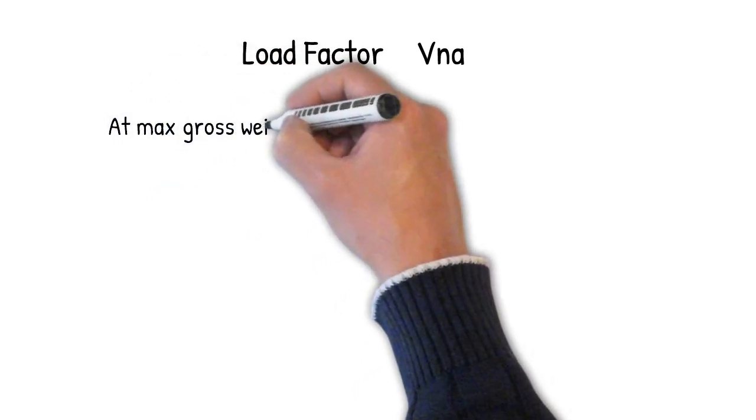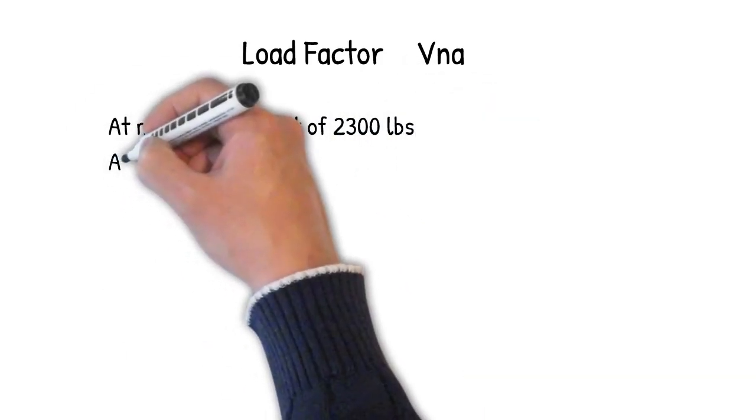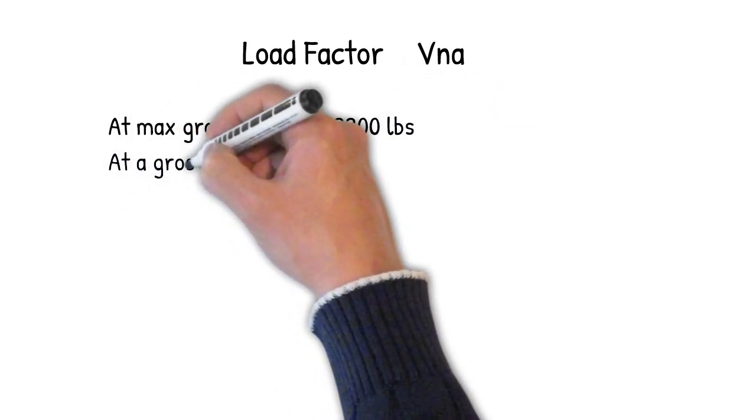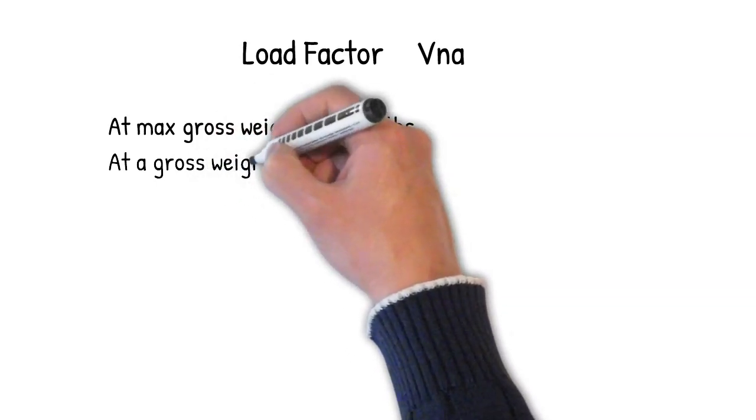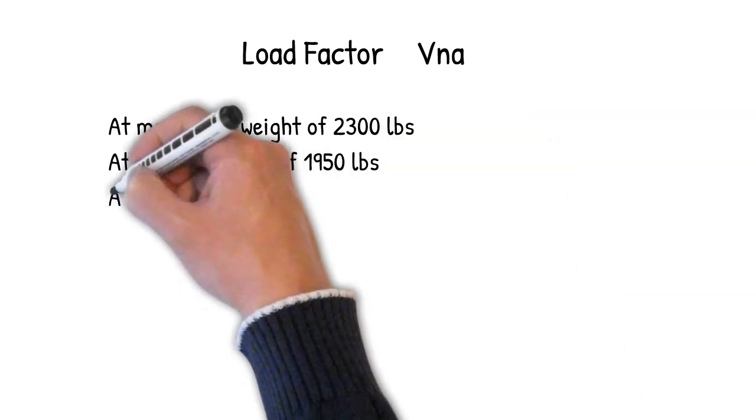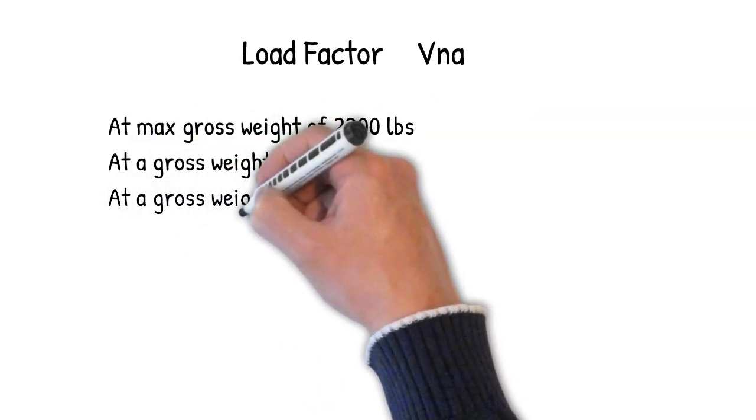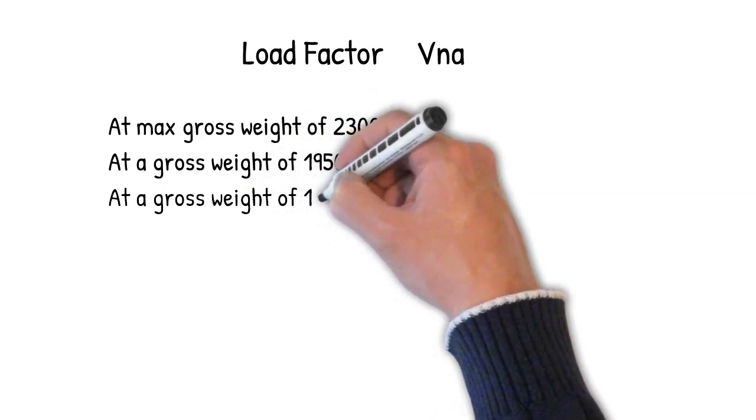You've probably already seen Va and Vo numbers in your POH, or the pilot's operating handbook, and I will assume you already know what they represent. However, if you're flying a Cessna 172, you may have noticed that the maneuver speeds for that aircraft has three different weights, each associated with different airspeeds. For example,